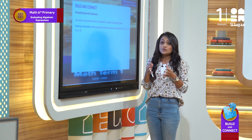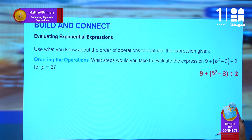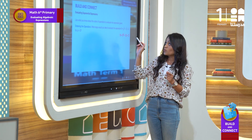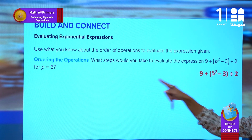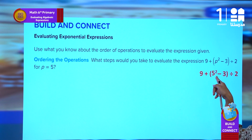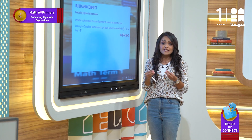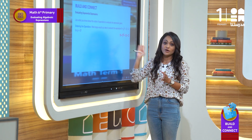We are asked to evaluate the expression when P equals 5. To evaluate the expression for P equals 5 means to substitute the variable with 5, as you see here. So we'll substitute P with 5 to the power of 2, and then the expression will be: 9 plus parenthesis 5 to the power of 2 minus 3, close the brackets, divide by 2. The algebraic expression has now changed into a numerical expression.